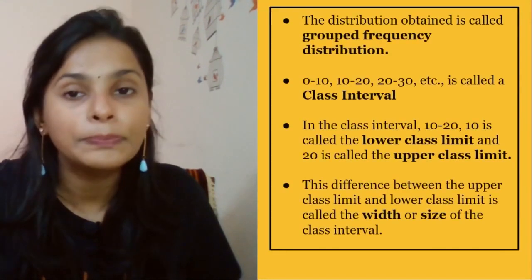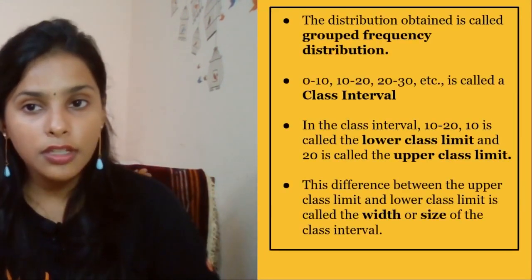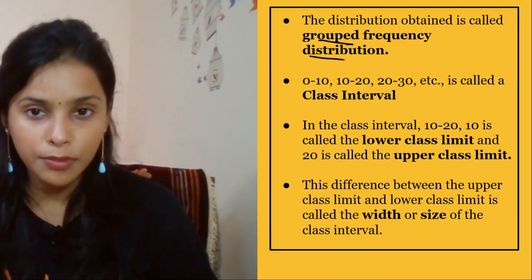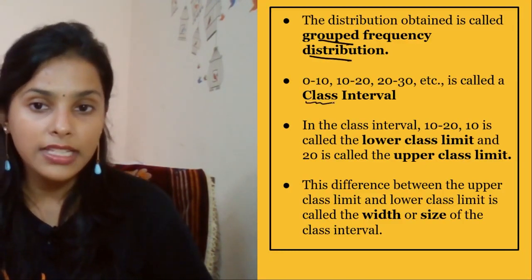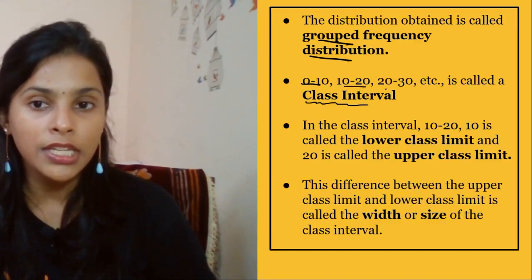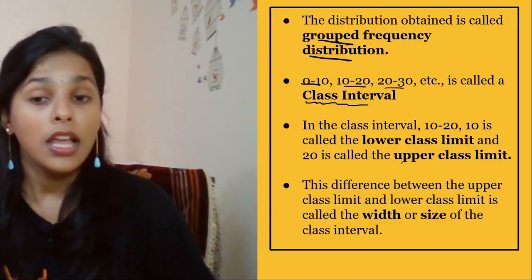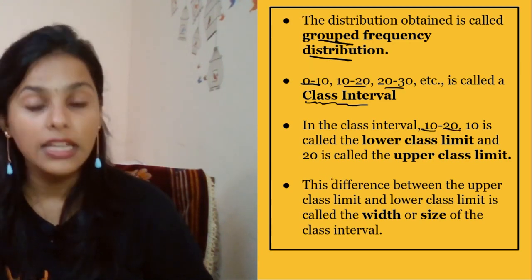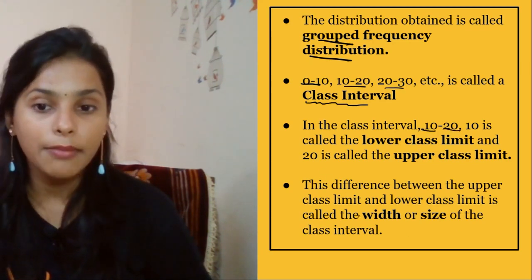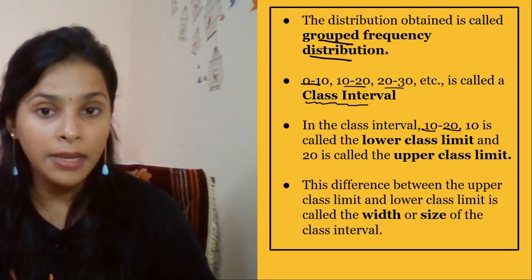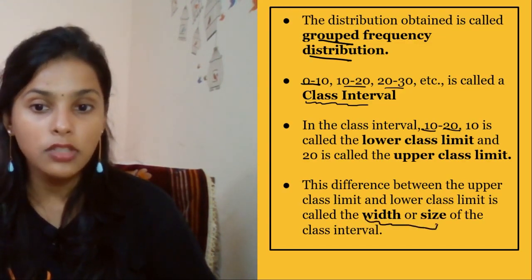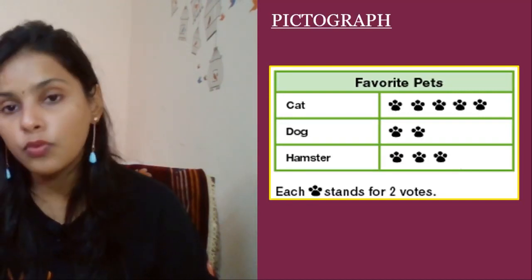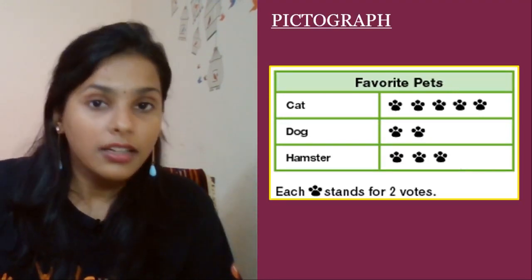The distribution obtained is called grouped frequency distribution or what is known as class interval. That means 0 to 10, 10 to 20, 20 to 30, etc. In the class interval 10-20, 10 is called the lower class limit and 20 is called the upper class limit. The difference between the upper class limit and the lower class limit is known as width or size or range. Now we are going to see how do we organize that data graphically.